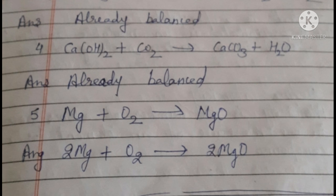Equation 4: Ca(OH)2 (calcium hydroxide) reacts with CO2 (carbon dioxide) to produce CaCO3 (calcium carbonate) plus H2O (water). Observing the number of atoms of each element on both sides, we find they are equal, so this equation is already balanced.